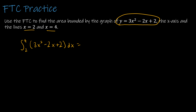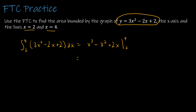Integrating: 3x squared becomes x cubed since the 3 cancels with the denominator; minus 2x becomes minus x squared since the 2s cancel; plus 2 becomes plus 2x; evaluated from 2 to 4. Plugging in 4: 4 cubed is 64, minus 4 squared is 16, plus 2 times 4 is 8, giving 56. Plugging in 2: 2 cubed is 8, minus 2 squared is 4, plus 2 times 2 is 4, giving 8. So 56 minus 8 equals 48.